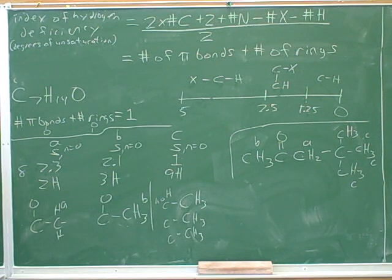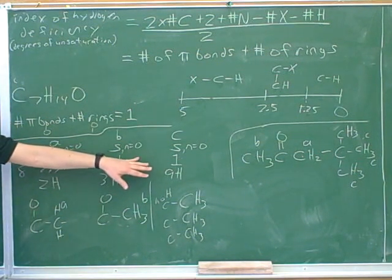Again, the biggest mistake students make is just trying to dive in and take a guess as to the whole structure. Well, you can do that forever because, especially with seven carbons, there's millions of different possible structures.